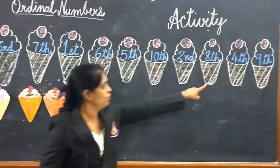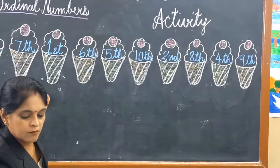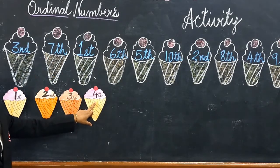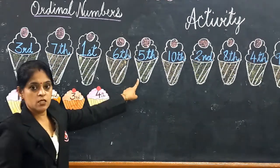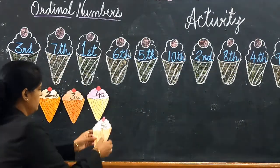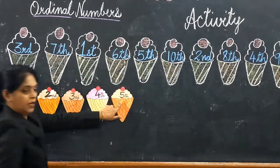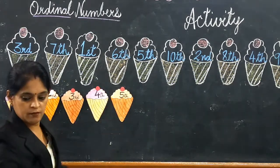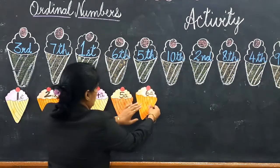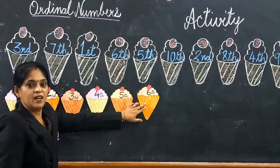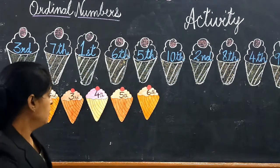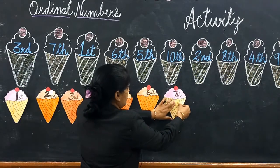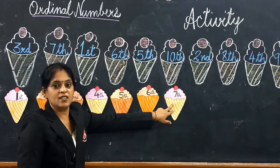Now next number is fourth — F-O-U-R-T-H, fourth. Next number is fifth — F-I-F-T-H, fifth. Next number is sixth — S-I-X-T-H, sixth. Next number is seventh — S-E-V-E-N-T-H, seventh.